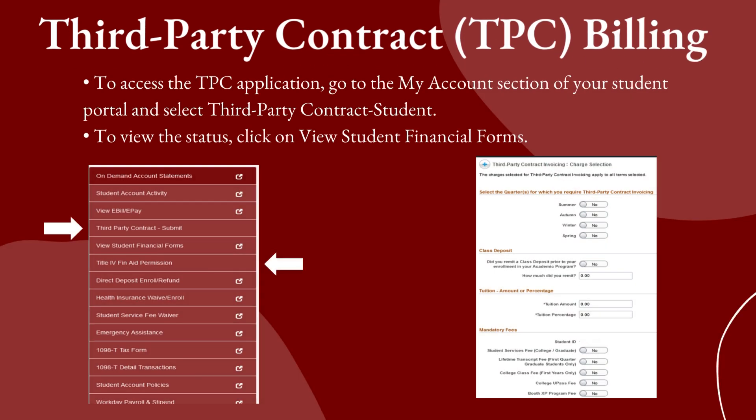To access the TPC application, go to the My Account section of your student portal and select Third-Party Contract Student. Be sure to select the quarters that require third-party contract invoicing, including tuition amount or percentage, mandatory fees, course fees, room and board, Maroon Dollars, foreign study fees, university student health insurance plans, and include any pertinent file attachments such as letters of credit. To view the status, click View Financial Forms and continue to monitor your uchicago.edu email account for updates throughout the quarter.